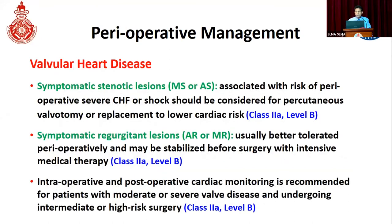Symptomatic stenotic lesions such as mitral stenosis and aortic stenosis in patients undergoing high-risk surgery who are likely to develop perioperative hemodynamic compromise should be considered for percutaneous valvular intervention to lower cardiac risk before surgery. Symptomatic regurgitant lesions are better tolerated and can be stabilized with medical therapy before surgery. However, all patients with significant valvular problems should be monitored very closely during the intraoperative and post-operative period, especially for intermediate and high-risk surgery.